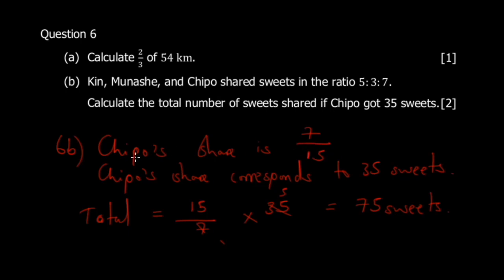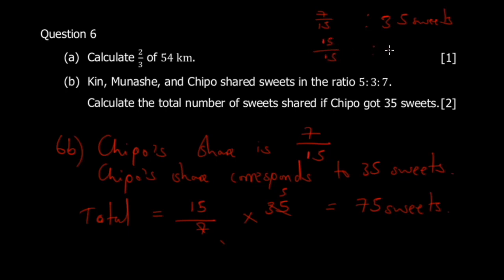The logic here is: when you have a share and a corresponding number, invert the fraction and multiply by the share. Using simple proportion: 7 over 15 equals 35 sweets, so you want 15 over 15. Since we said 'more,' bigger number on top — 15 over 7 — then multiply by 35 sweets. That's where the method comes from.